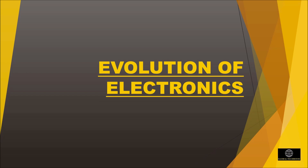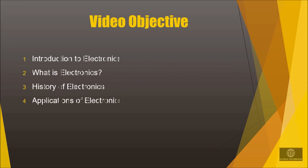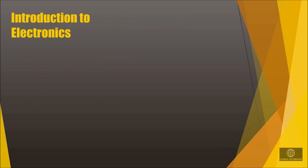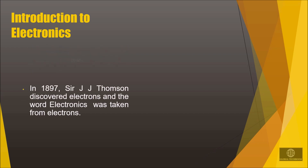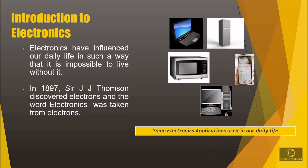Welcome to our new video. Now let us go through the evolution of electronics. In simple words, we can say that electronics is the study of how to control the flow of electrons. In this video we will be going through the introduction, history, and application of electronics. The word electronics was taken from electrons, which was discovered by Sir J.J. Thomson.